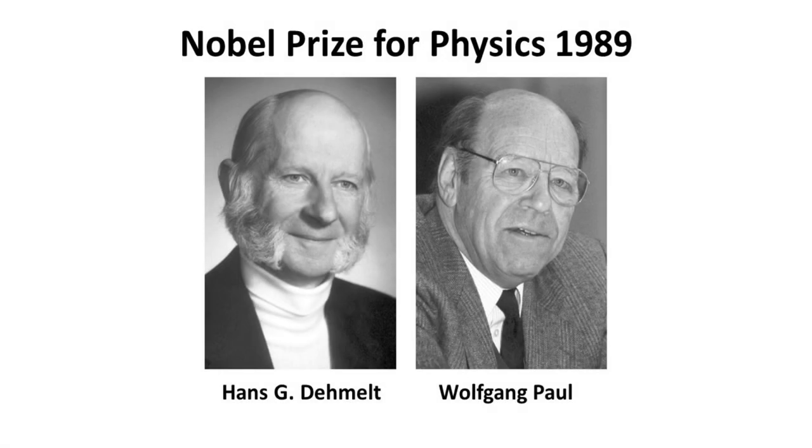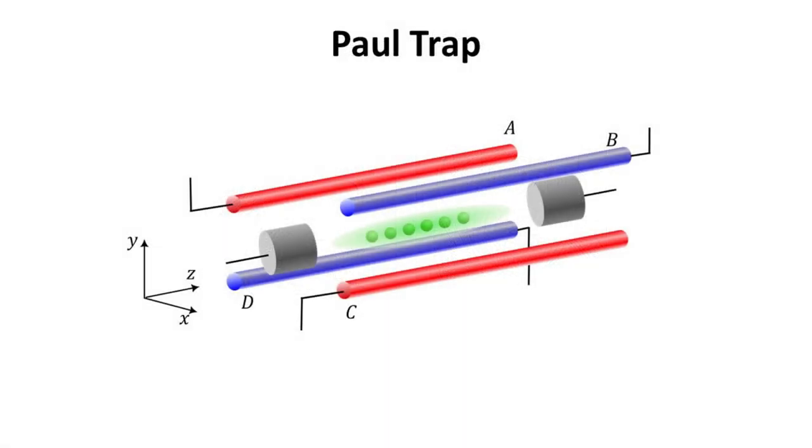Part 4: Paul Trap. Half of the Nobel Prize in Physics 1989 was awarded to Hans Dehmelt and Wolfgang Paul for the development of the ion trap technique, now commonly known as the Paul Trap.